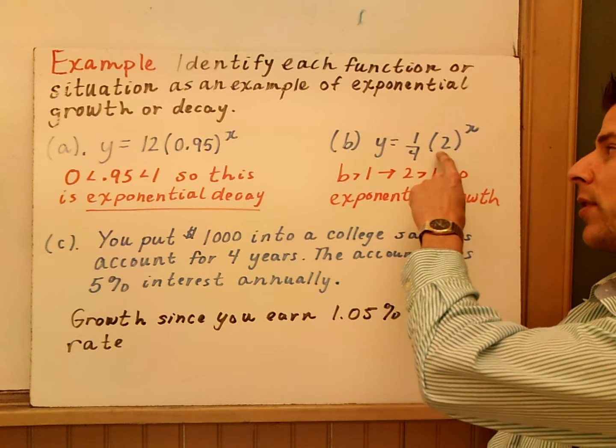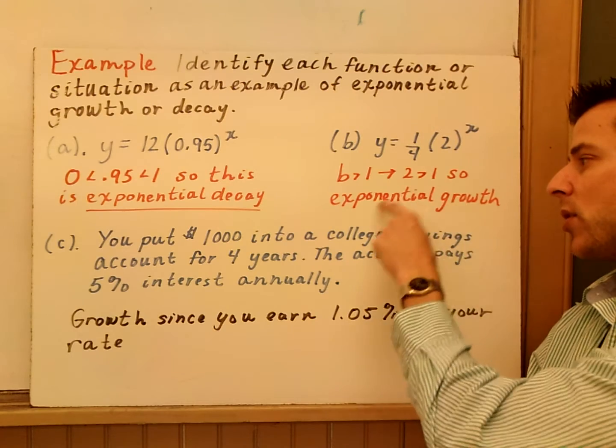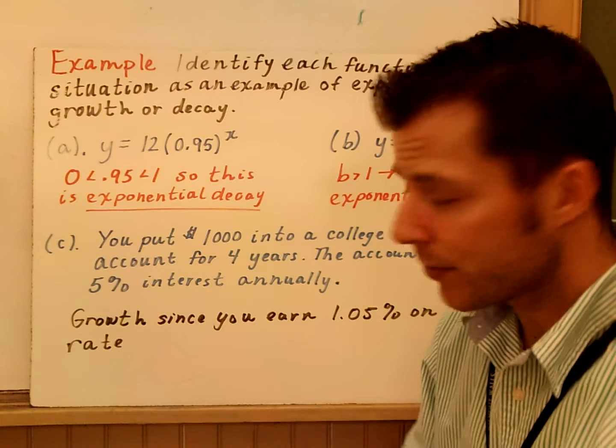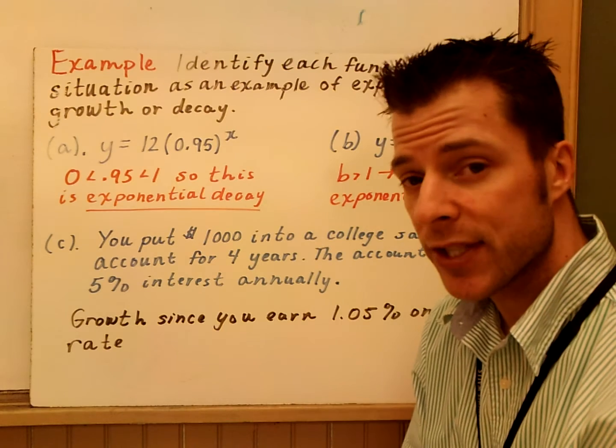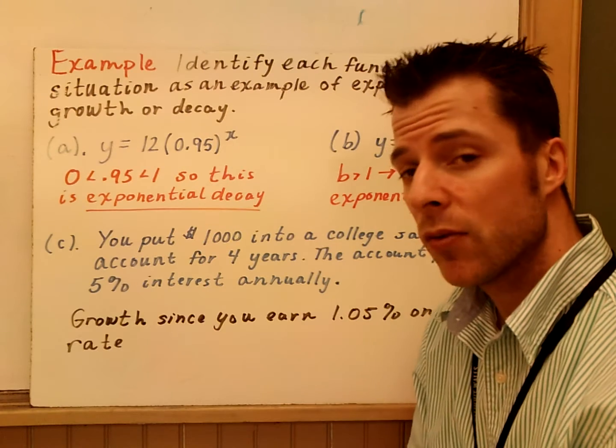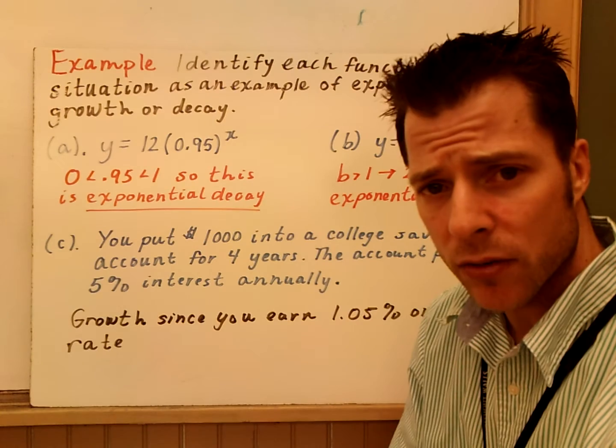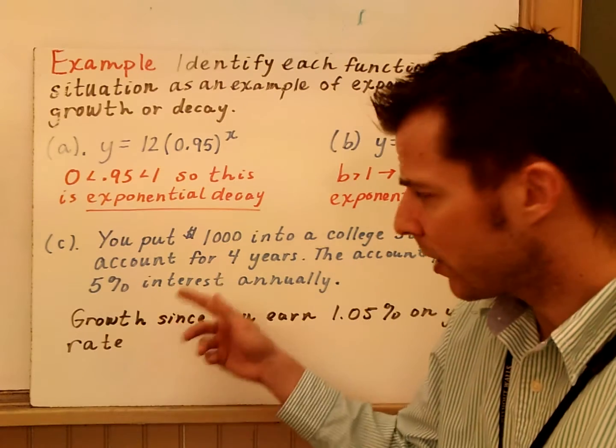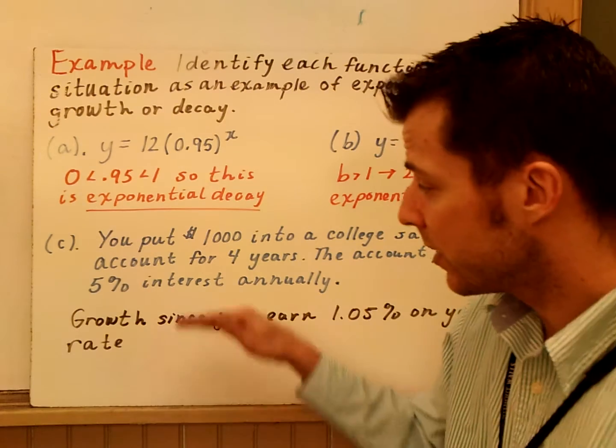In part b, I have 1 fourth times 2 to the x. My b value is 2. Well, 2 is greater than 1. So, this is exponential growth. Most of the time, in example c here, you're going to see most of the time when you invest money, you're going to have exponential growth. It would not make sense for you to invest money where you have exponential decay. Decay really happens, there's a couple things, but mostly like when you buy a car and it depreciates.